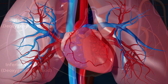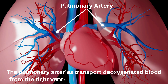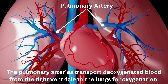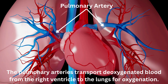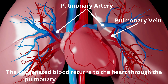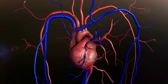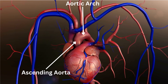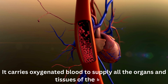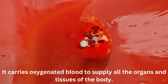The pulmonary arteries transport deoxygenated blood from the right ventricle to the lungs for oxygenation. The oxygenated blood returns to the heart through the pulmonary veins, entering the left atrium. The aorta is the largest artery in the body, originating from the left ventricle, and carries oxygenated blood to supply all the organs and tissues of the body.